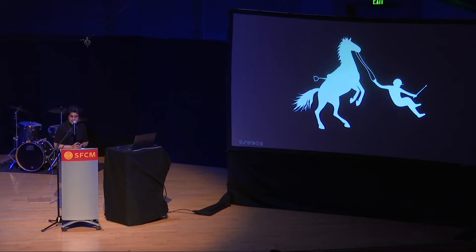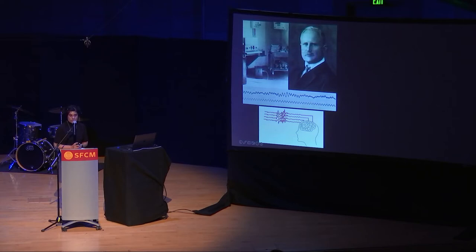His name was Hans Berger. Later, he became a neuropsychiatrist in Berlin and developed a machine to record the human brain waves. Today, we call it EEG, or electroencephalography.